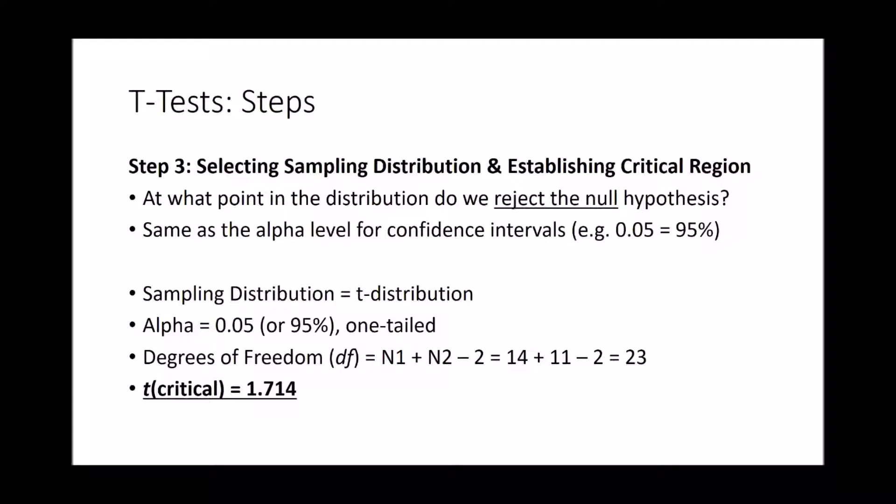To identify the t-critical region — analogous to our z-score — we use degrees of freedom. Degrees of freedom is calculated as n1 plus n2 minus 2, where n1 is the sample size of group 1, n2 is the sample size of group 2, and we subtract 2 because we have two groups. In our case, we get degrees of freedom of 23. Looking at a t-appendix or t-chart for a one-tailed test, we get a t-critical value of 1.714. This is the value we check our t-observed against.